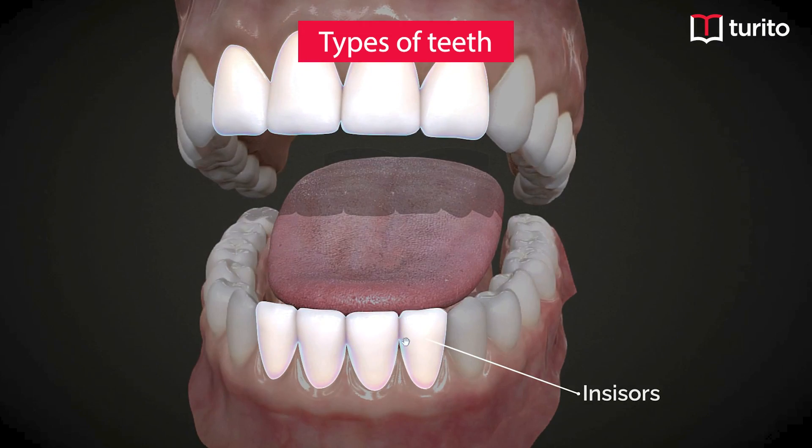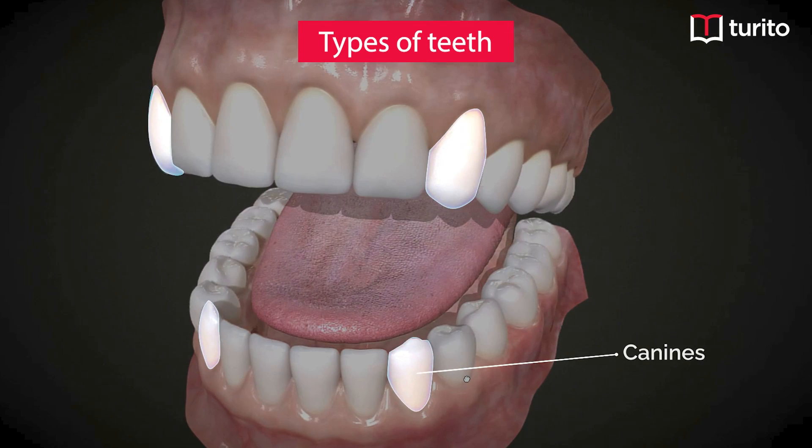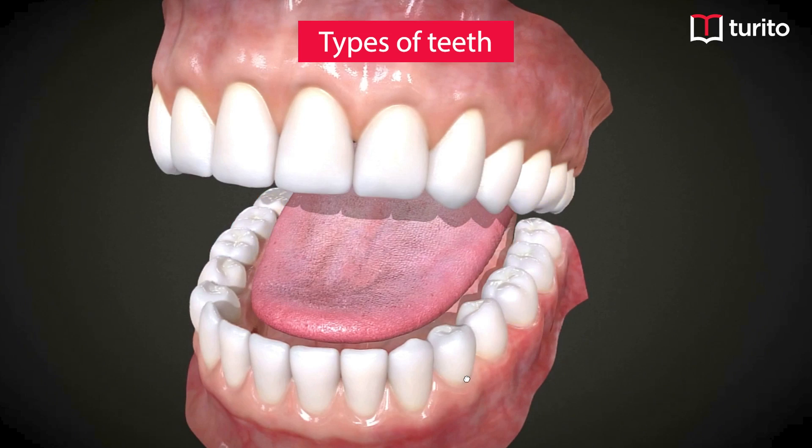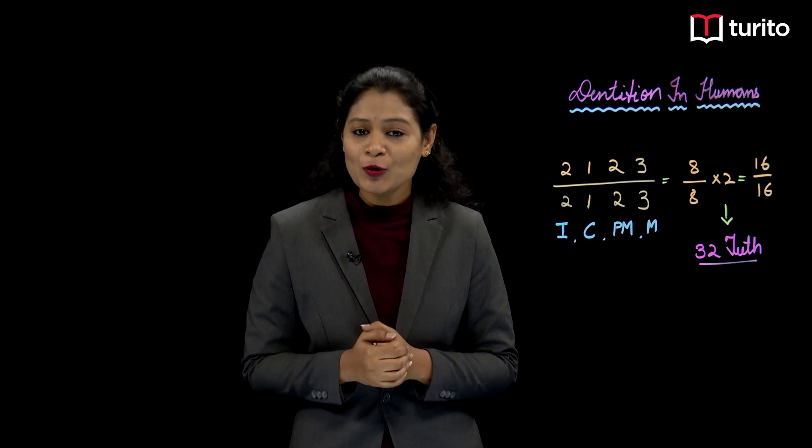There is a diversity present in our teeth, which means there are different types of teeth present in our jaw. We have incisors, canines, premolars, and molars. Because we have different types of teeth, it is said that human beings have heterodont type of teeth.